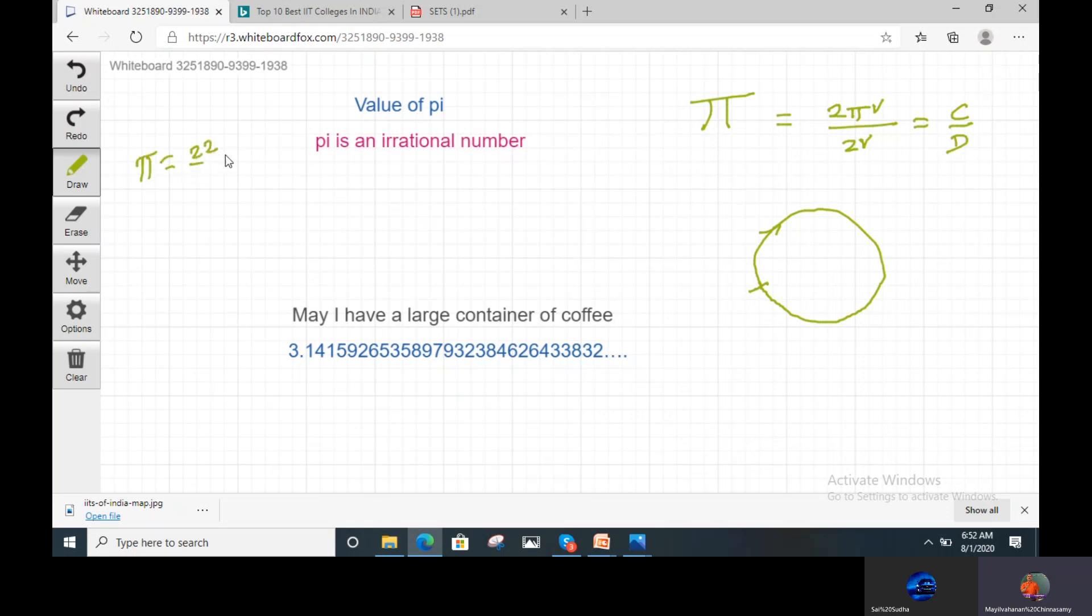So if you write 22 by 7, this is not a Pi value. But we are using Pi value as 22 by 7. Sometimes we are using Pi value as 3.14. But it is very clear that Pi is not a rational number.